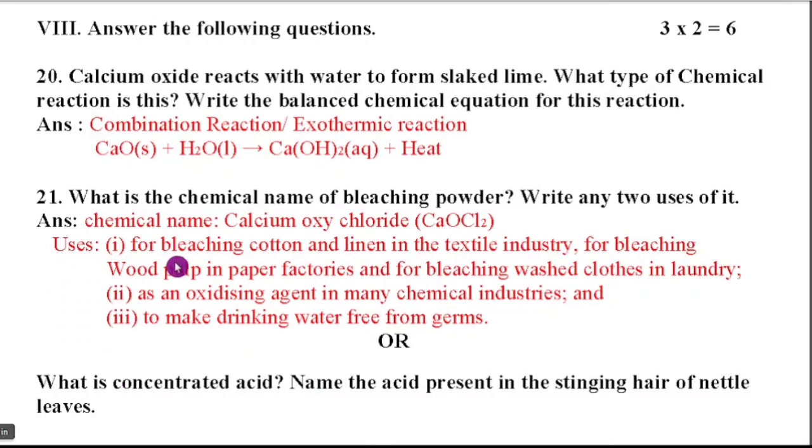21st question. What is the chemical name of bleaching powder? Write any two uses of it. The chemical name of bleaching powder is calcium oxychloride, CaOCl2. The uses of bleaching powder is for bleaching cotton and linen in the textile industry, for bleaching wood pulp in paper factories and for bleaching washed clothes in laundry. Second one, as an oxidizing agent in many chemical industries and third one is to make drinking water free from germs.